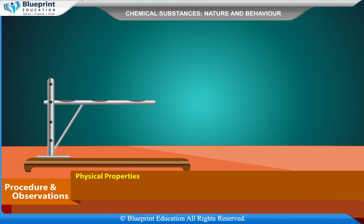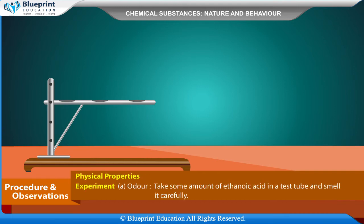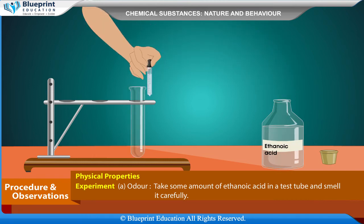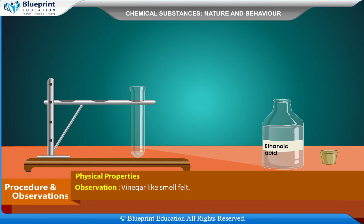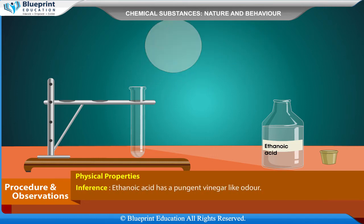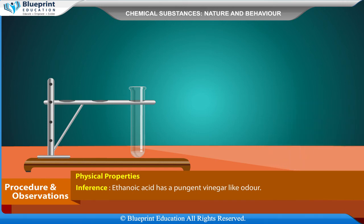Physical Properties — Experiment: Odour. Take some amount of ethanoic acid in a test tube and smell it carefully. Observation: Vinegar-like smell felt. Inference: Ethanoic acid has a pungent, vinegar-like odour.